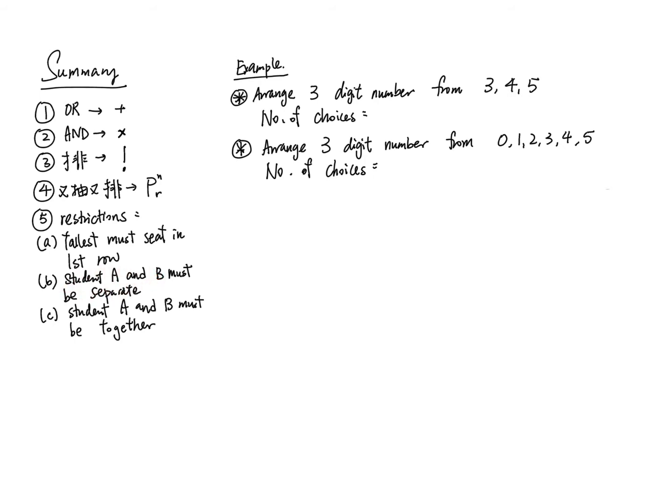For the first example, you have to arrange a three-digit number from three data. Since you don't have to select anything, you just use factorial. For the second example, you have to arrange a three-digit number from six data: 0, 1, 2, 3, 4, 5. This means you have to use permutation, and